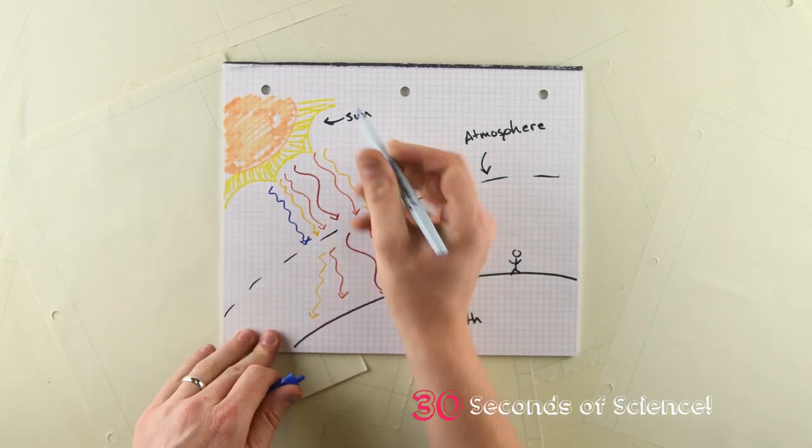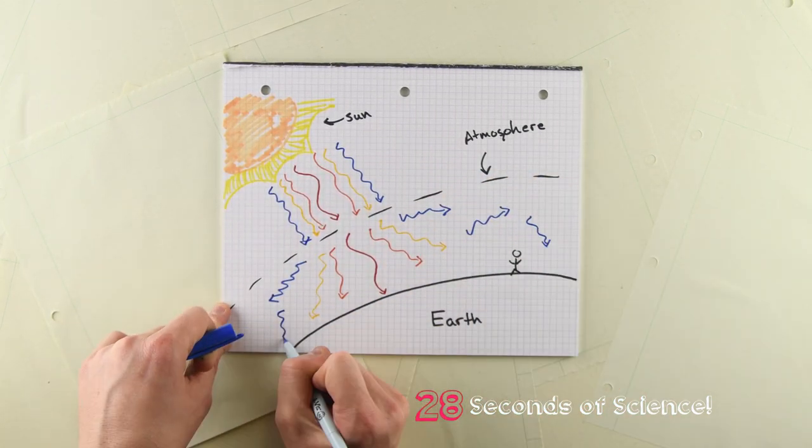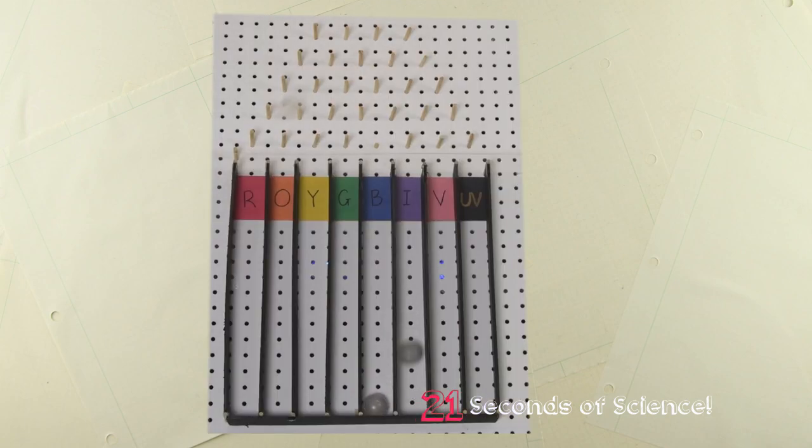In fact, the amount of scattering is proportional to the wavelength of light to the fourth power, which means short wavelengths are much more likely to scatter. This is why the sun looks orange in the sky. The long wavelengths of red and yellow don't scatter as much and make it straight through the atmosphere, while the blues and purples are sent all over the place.